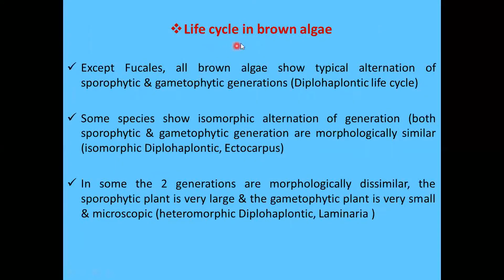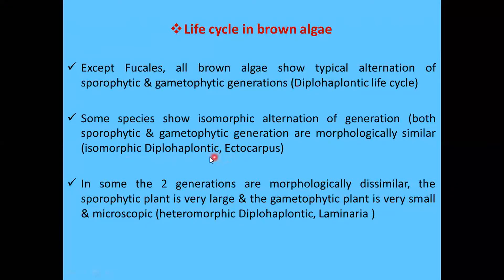Next we will discuss the life cycle in brown algae. Except for members of Fucales, all brown algae show a typical alternation of sporophytic and gametophytic generations, also known as the diplohaplontic life cycle. Some species show isomorphic alternation of generation, meaning both generations are morphologically similar. This is also known as the isomorphic diplohaplontic life cycle, which occurs in Ectocarpus.